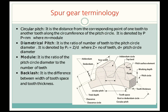The first terminology is circular pitch. It is the distance from a corresponding point of one tooth to the same corresponding point on the adjacent tooth, measured along the circumference of the pitch circle. It is denoted by p, where p equals π times m, and m is the module, which we will see further.